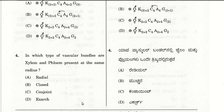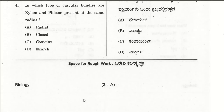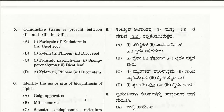The fourth question: in which type of vascular bundle are xylem and phloem present at the same radius? The answer is conjoint vascular bundle, wherein both xylem and phloem are at the same radius. The fifth question: conjunctive tissue is present between xylem and phloem in dicot root. So the choice is B — conjunctive tissue is present between xylem and phloem in dicot root.